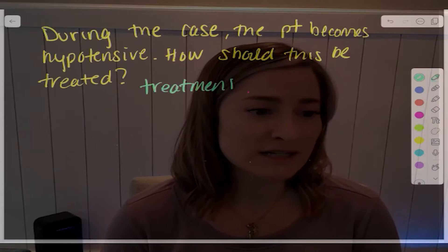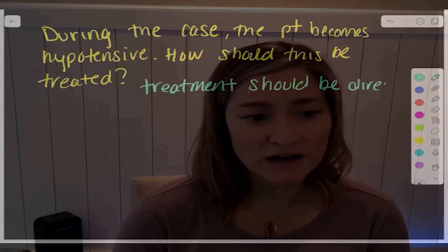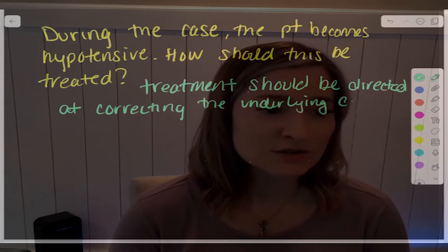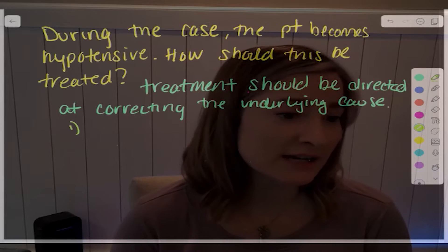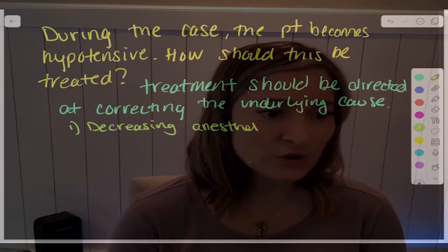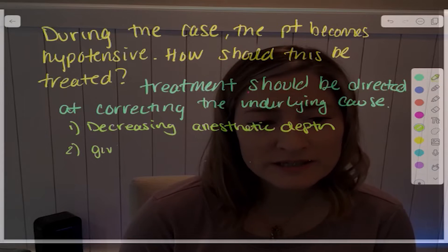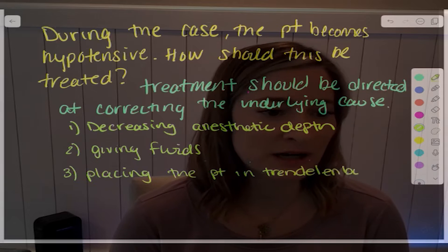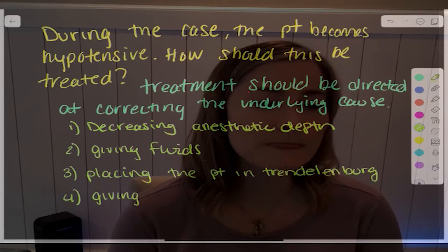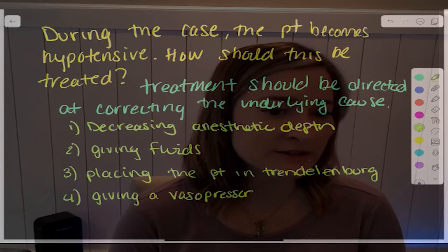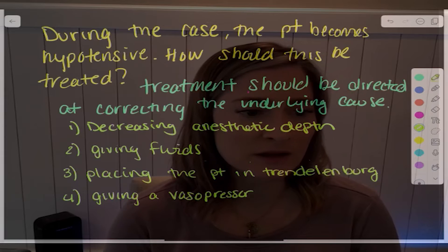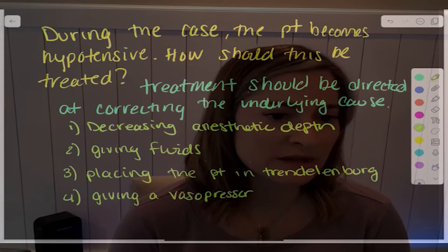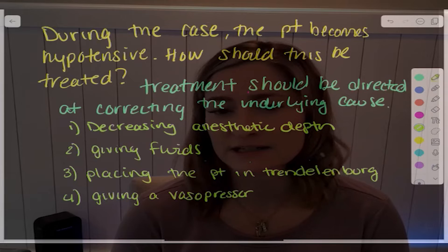Treatment should be directed at correcting the underlying cause and may include the following: consider decreasing your anesthetic depth, consider giving fluids, consider placing the patient in Trendelenburg (head down), and consider giving a vasopressor such as phenylephrine. If there's no obvious cause, the thing I would recommend the most is just decreasing the depth of anesthesia.